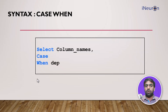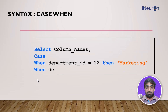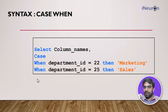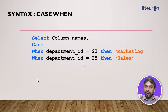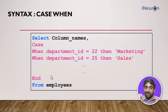For example: WHEN department_id = 22 THEN 'Marketing'. You can add multiple conditions — WHEN department_id = 25 THEN 'Sales' — and close with END. The name of that new column will default to the entire CASE expression, which we'll change later. This is the fourth or fifth column depending on how many you've selected.